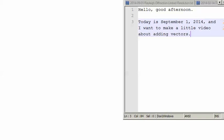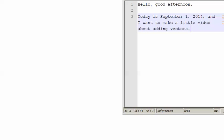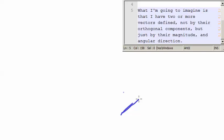Hello, good afternoon. Today is September 1st, 2014, and I want to make a little video about adding vectors. What I'm going to imagine is that I have two or more vectors defined not by their orthogonal components, but just by their magnitude and angular direction.